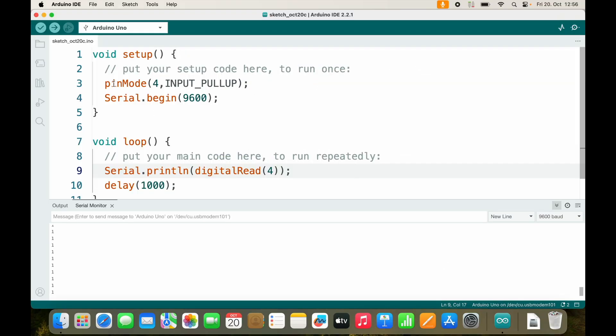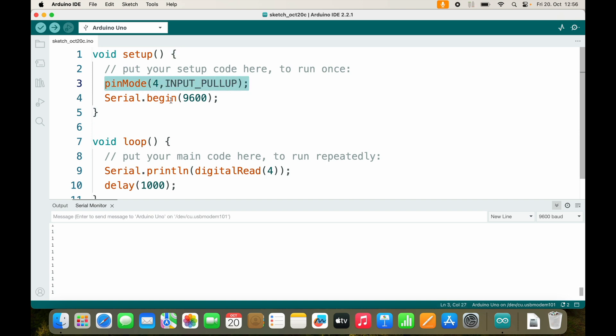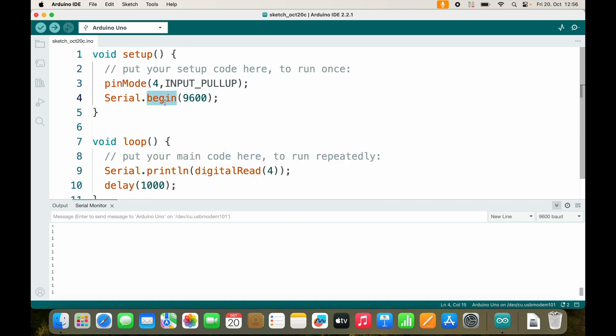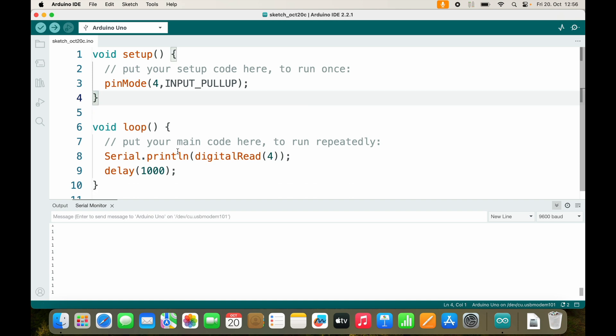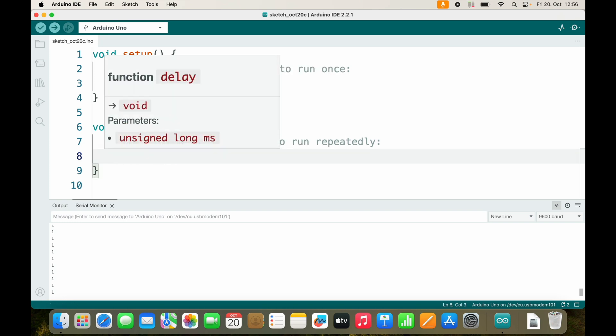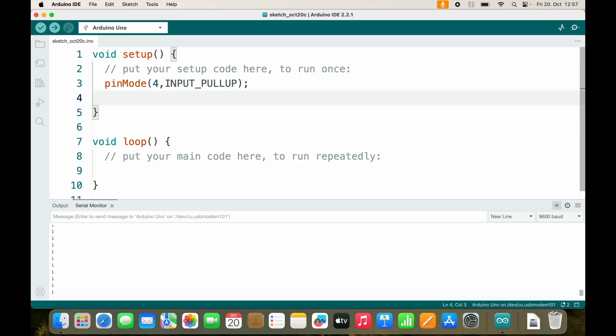Okay, so we will definitely have pin 4 defined as INPUT_PULLUP, but I will remove the Serial.begin and I will also remove Serial.print, and we can also remove the delay. What we want is to also have pin 13 defined as output. So I will add one more pinMode, pin 13, and define it as OUTPUT.